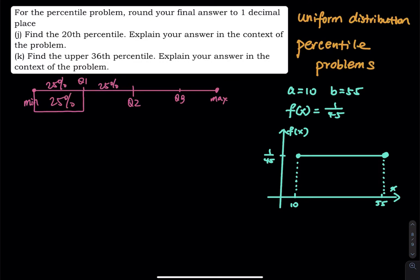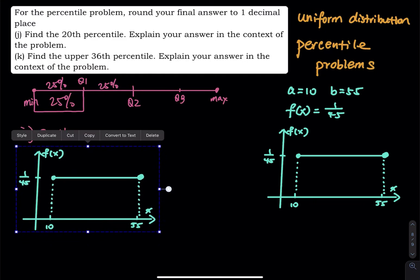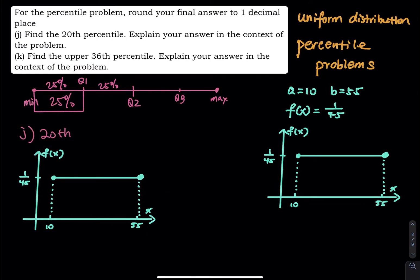This problem is asking for the 20th percentile. The 20th percentile works similar to Q1 — I am asking you to cut 20% on the left of the graph, and you have to tell me what the value of k is. In a regular probability problem, I give you the lower cutoff, the upper cutoff, and the height of the rectangle, and you find the area. In a percentile problem, we do it backward: I give you the probability and you tell me where to cut the graph.